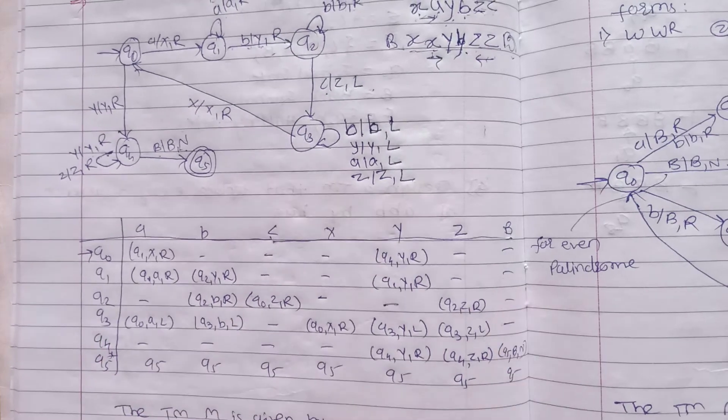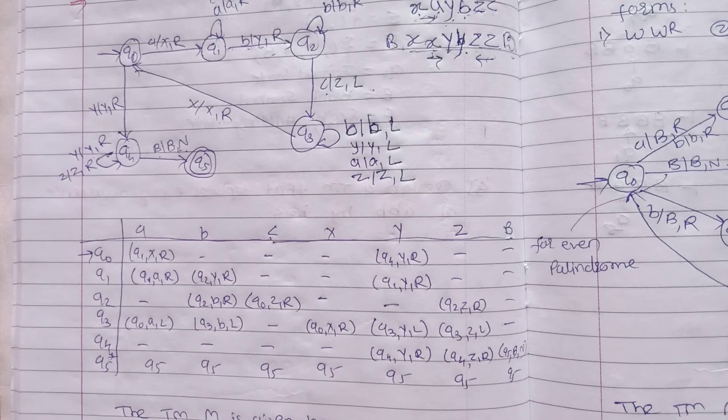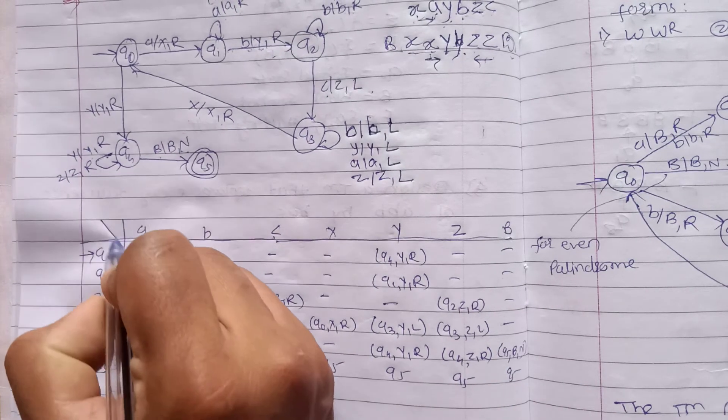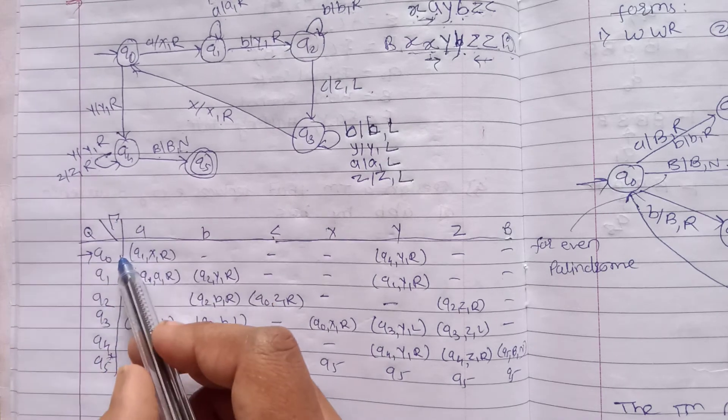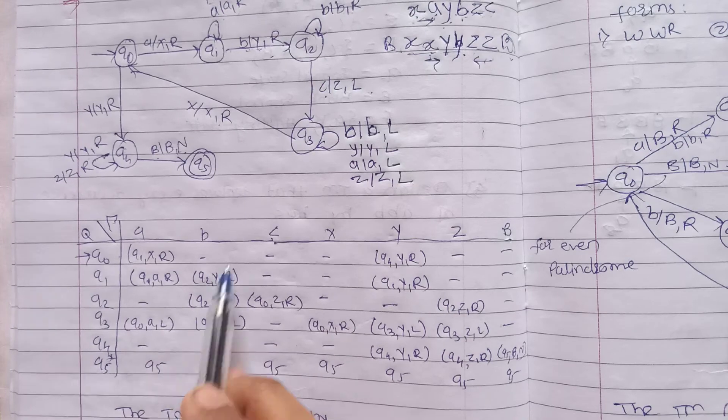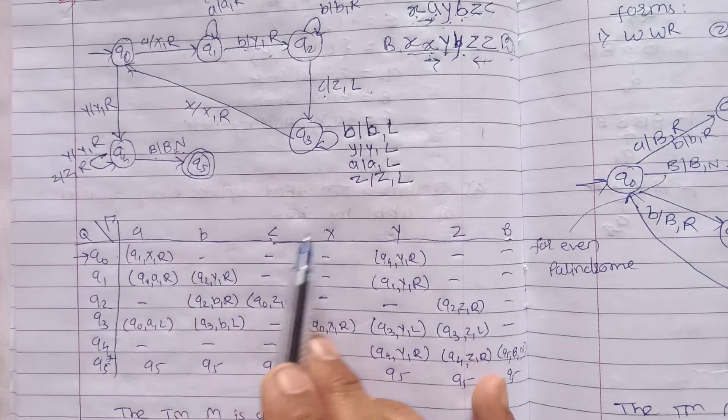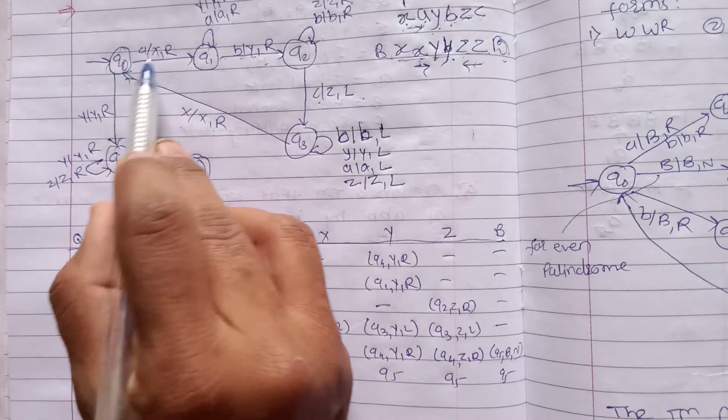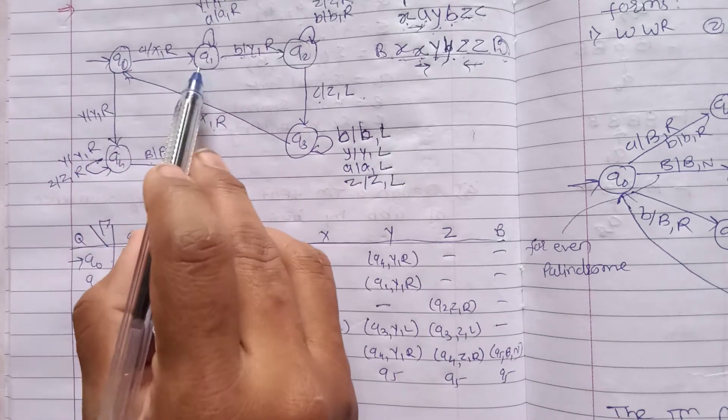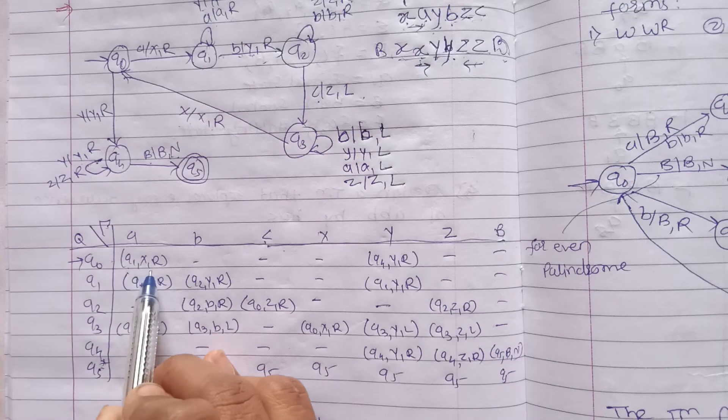Likewise we have to apply the logic and design the Turing machine. After that, in the same way we have to draw the transition table between states and tape elements. States are q0 to q5, tape elements are a, b, c, x, y, z and blank.